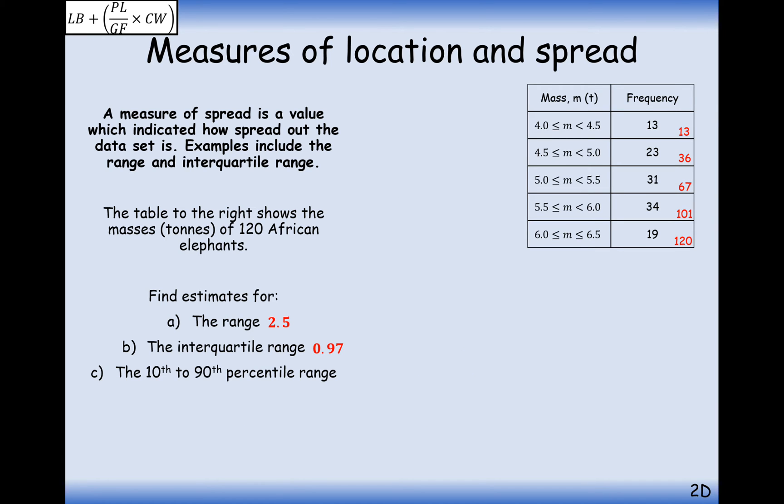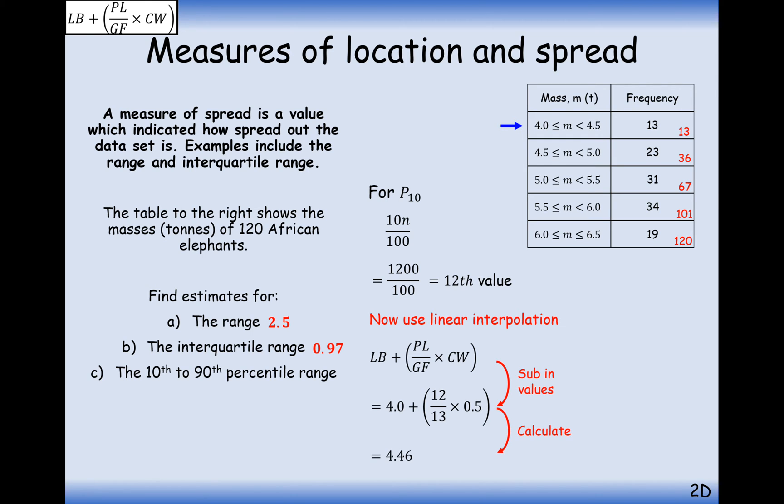For the 10th to 90th percentile, it's basically the same thing, but we're just going to find the 10% marker of 120 and do some linear interpolation on that. So it's going to be in the first group up here with a lower bound of 4.0. It's going to be the 12th value into this group out of 13 data points with a class width of 0.5. So we're going to get 4.46 here.